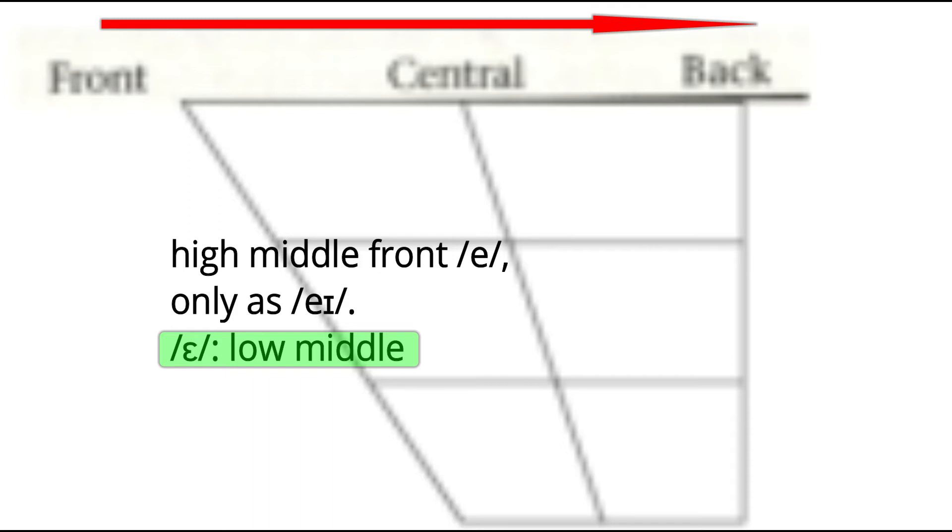The notation for a high middle vowel is E. In English, the high middle E does not occur as a pure sound and it occurs only as a part of a diphthong E.